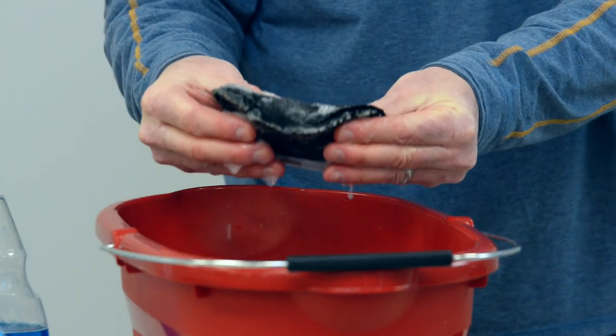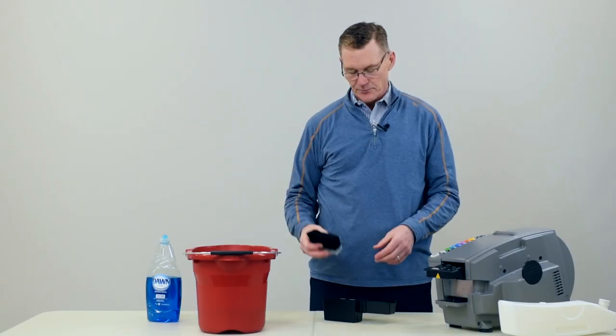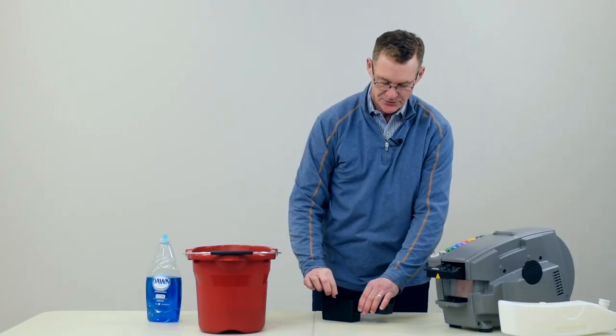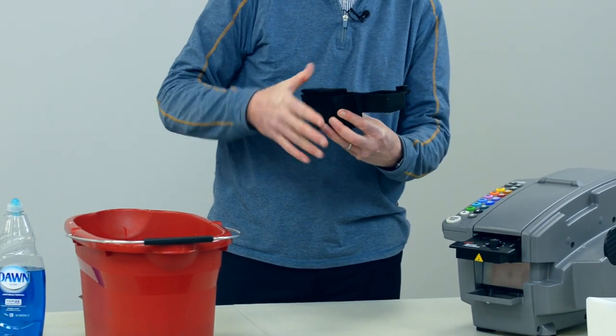Then rinse the brush under some warm water in the sink. Then you can take your clean brush and snap it back into the water tank like so, with the bristles heading in the direction of the tape.